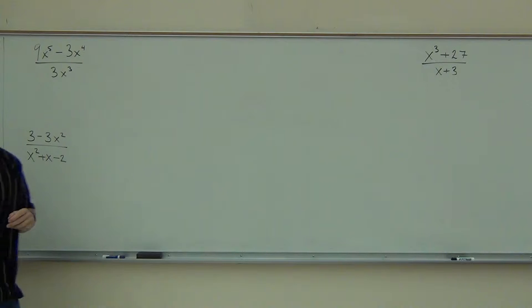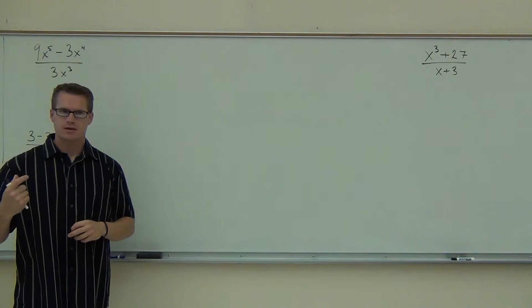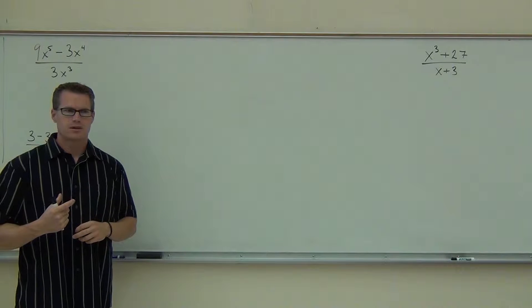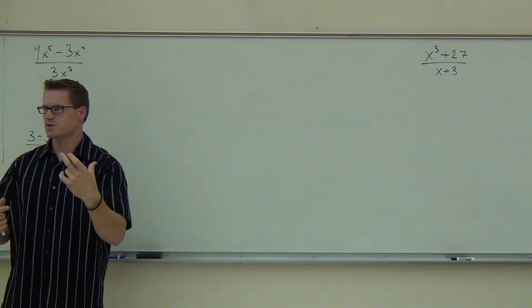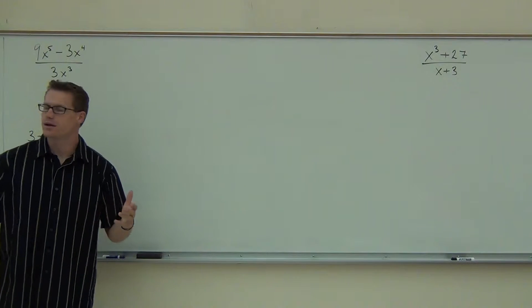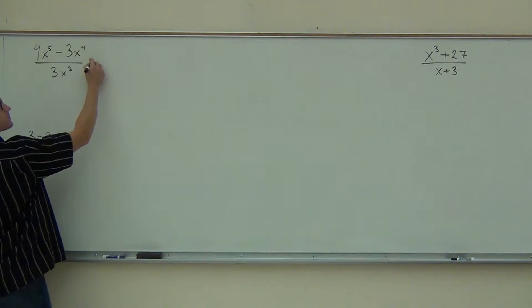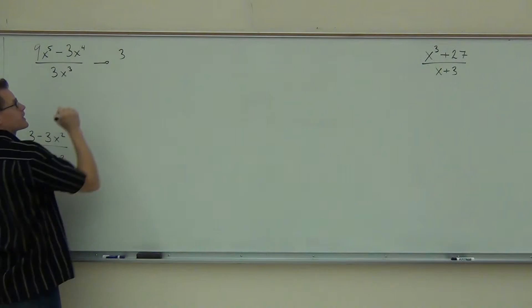On the numerator though, there's something we can factor out. Now the question is, do I need to factor out a negative or not? No. Do you see how the largest term is already positive? The x to the fifth with the largest exponent is already positive. That's what we want to happen. So we don't need to factor out a negative there.